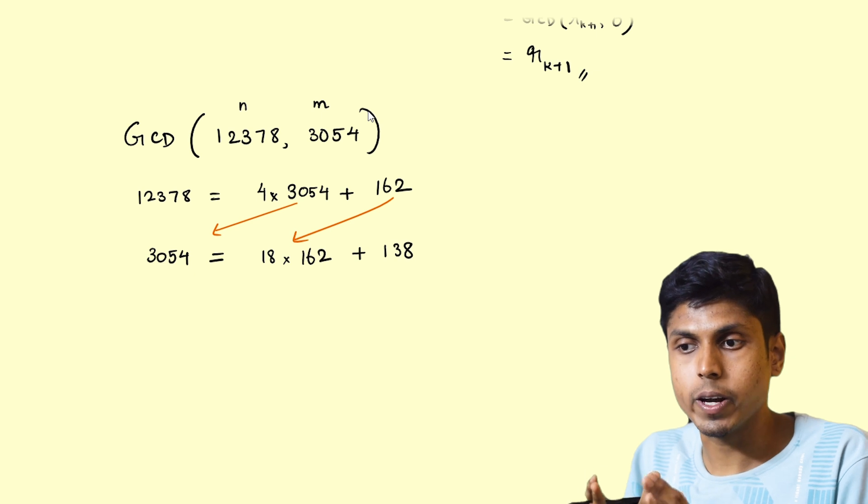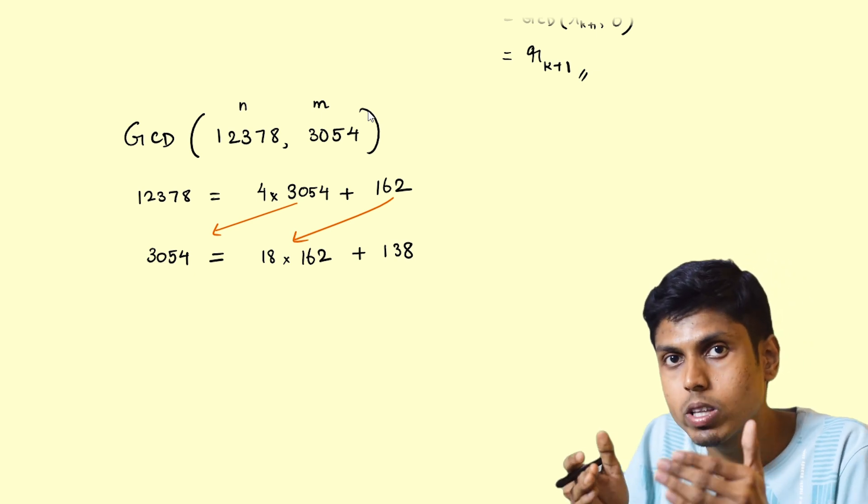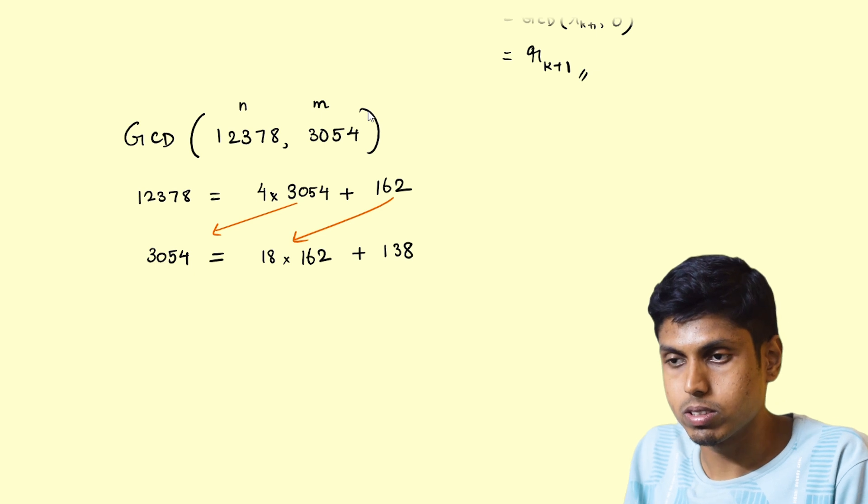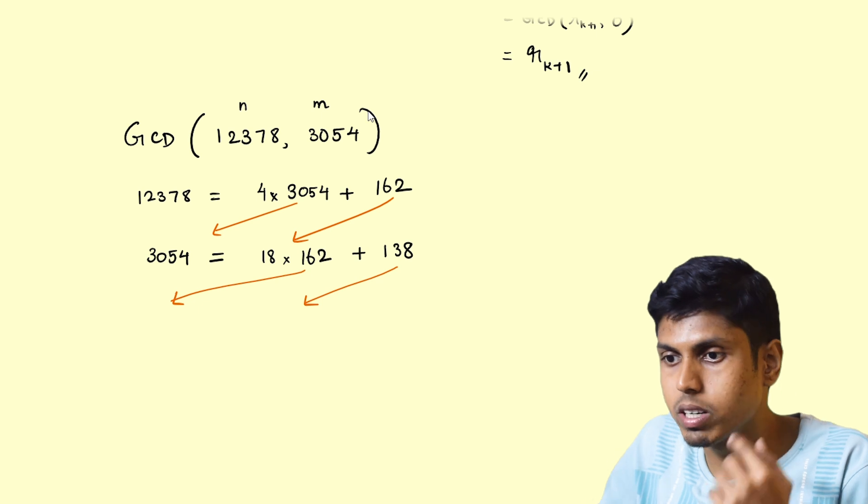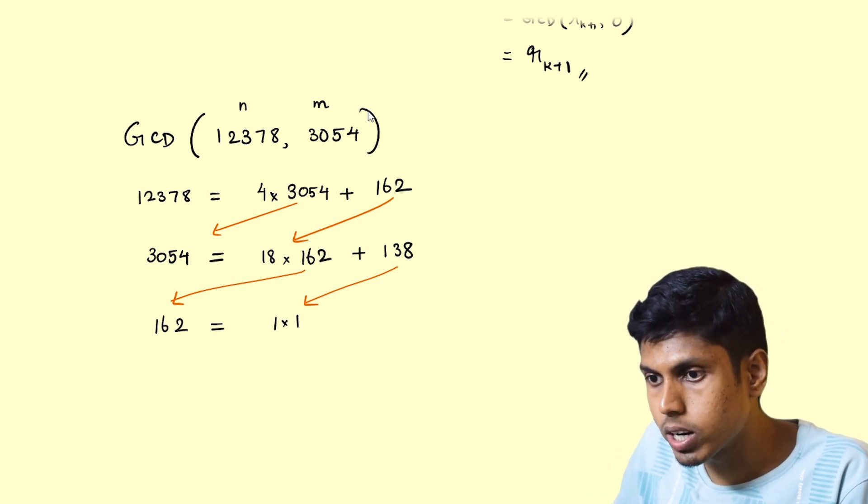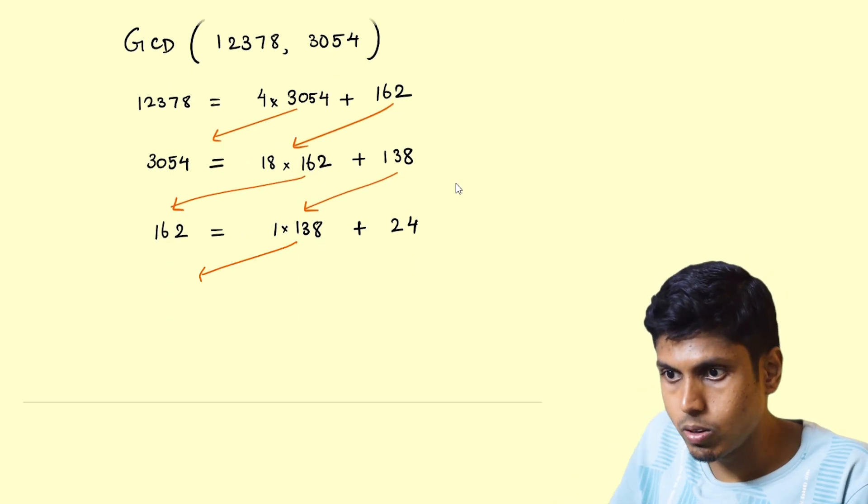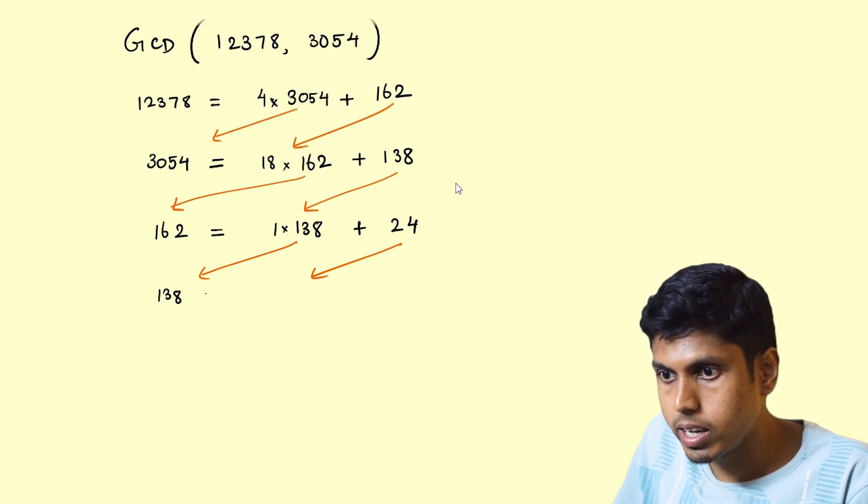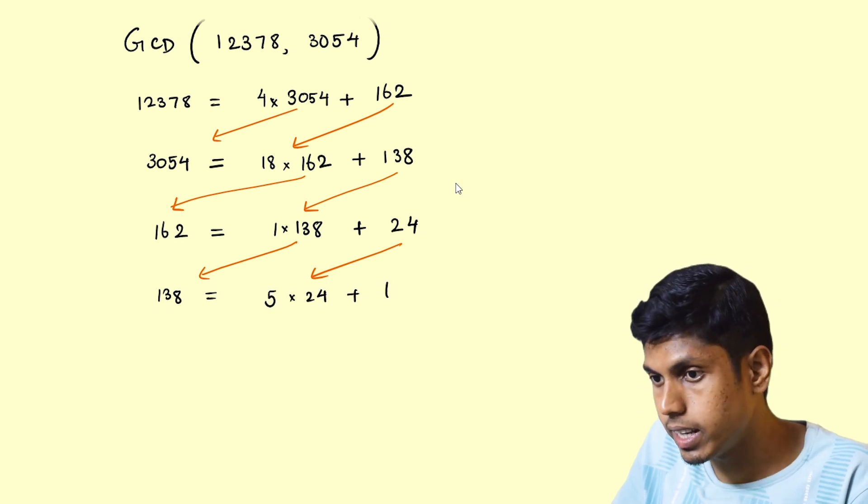So 3054 equals 18 times 162 plus 138. Again, this requires some calculation from your side as well. Please do verify along the way we progress. Now consider the divisor and the remainder, and let's perform the division algorithm. 162 is simply 1 times 138, and the remainder would be 24.